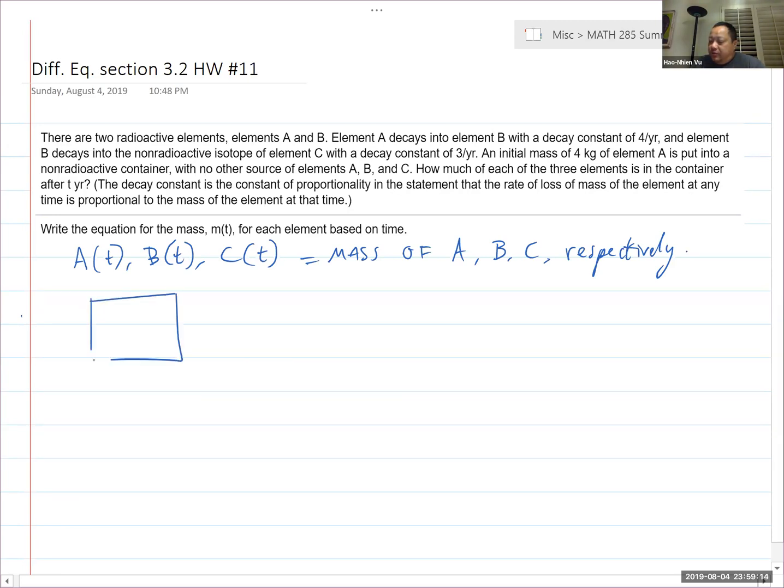So I like to think of this in terms of compartmental analysis as equivalent to having three containers where the brine would just flow out of one container to another. So from A it flows into B and from B it flows into C. A has no input. It starts out four kilograms but it's not getting any extra.